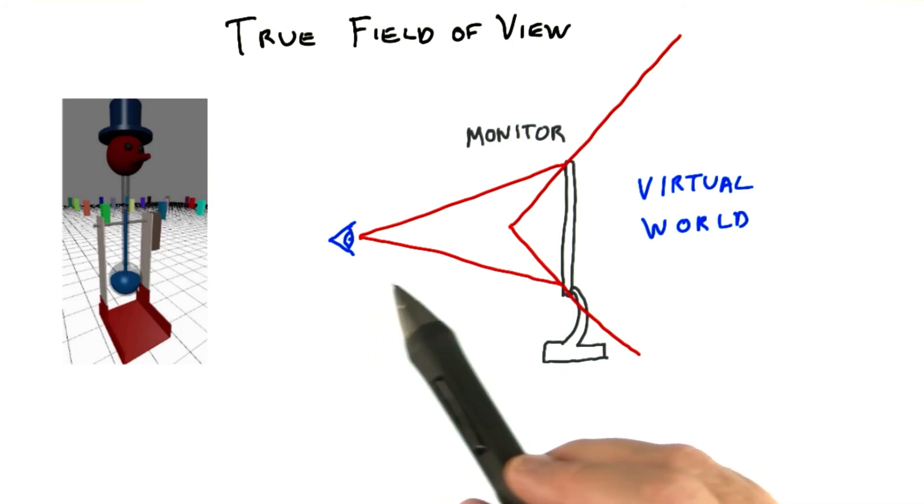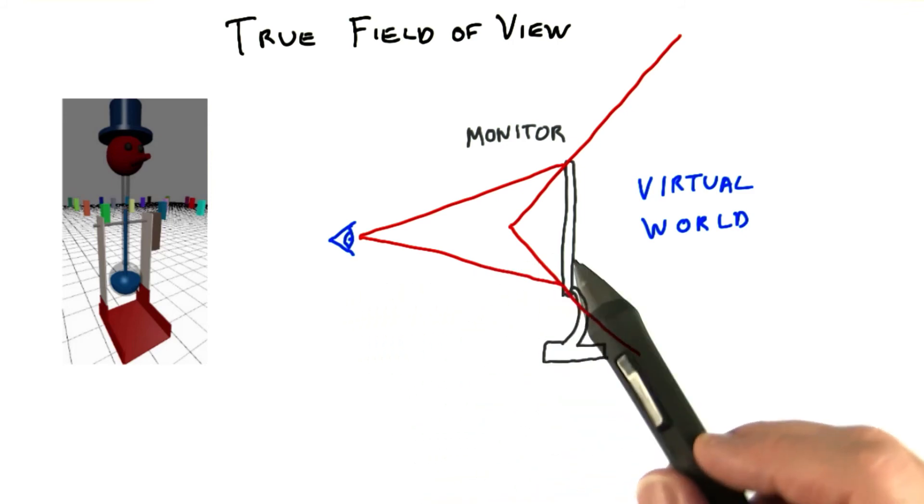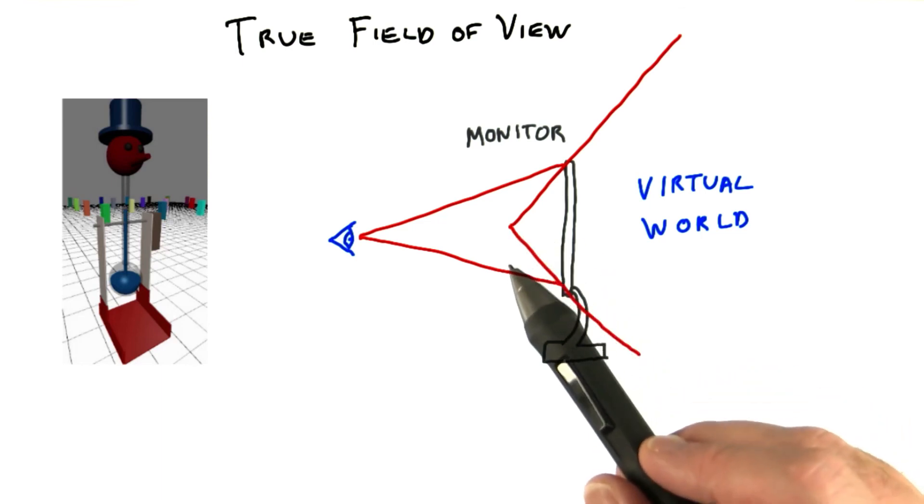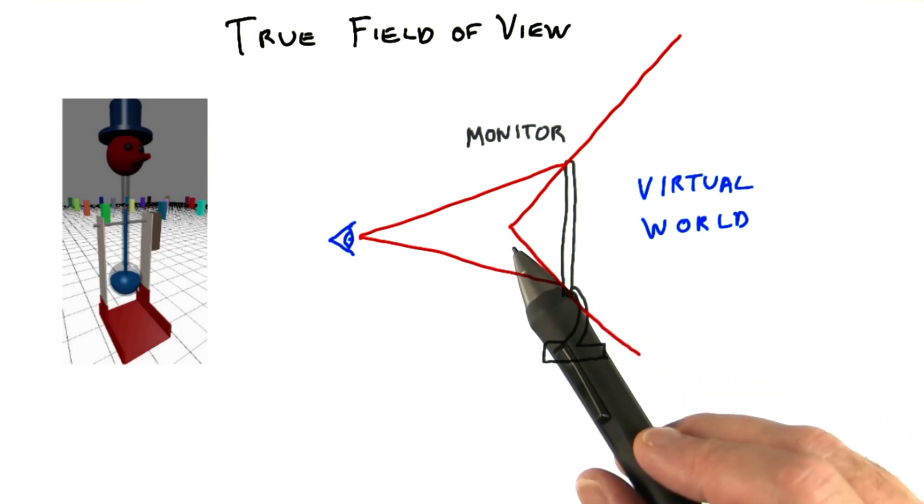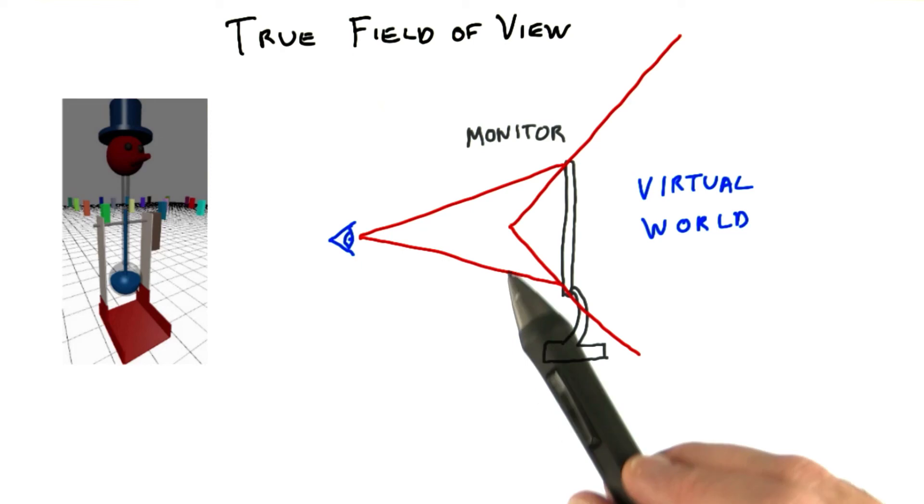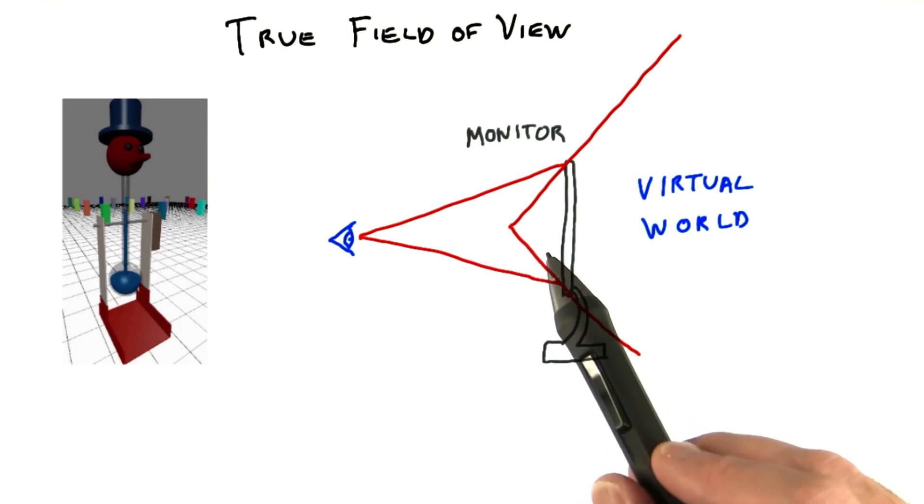If you moved your point of view so that you were at the apex of the virtual world's frustum right here, the virtual world would appear undistorted. Of course, it might actually all be blurry at this distance, or you might get a massive headache, but that's the theory.